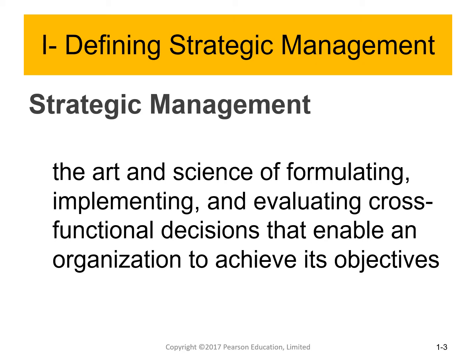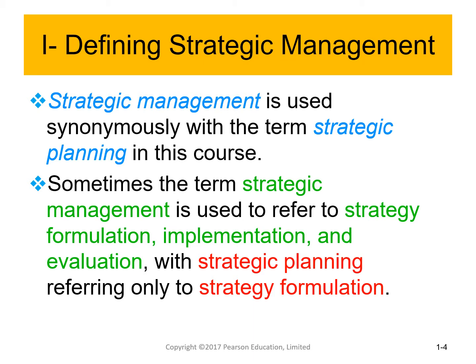These decisions help the organization reach its objectives. In this textbook, the term 'strategic management' carries the same meaning as 'strategic planning.' However, in other textbooks, the meaning may differ — strategic management refers to strategy formulation, implementation, and evaluation, whereas strategic planning refers to strategy formulation only. In our book, we use strategic management with the same meaning as strategic planning.